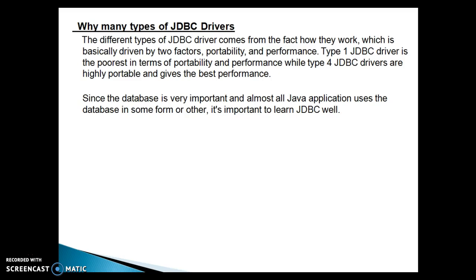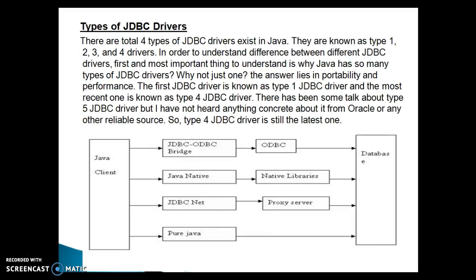As discussed, there are a total of four types of JDBC drivers in Java: Type 1, Type 2, Type 3, and Type 4. To understand the differences between them, the first and most important thing to understand is why Java has so many types of JDBC drivers — why not just one?